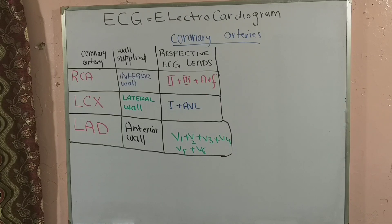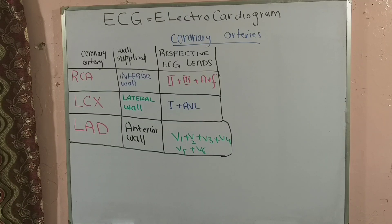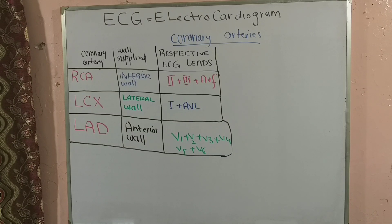Out of the six chest leads, the change should be present in at least two consecutive chest leads. For example, if a change is in V1 and V2, we say something is going on with the left anterior descending artery, and the anterior wall is showing that change, as represented by those leads on the ECG paper.